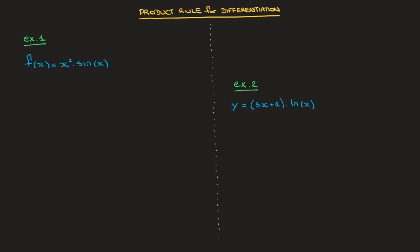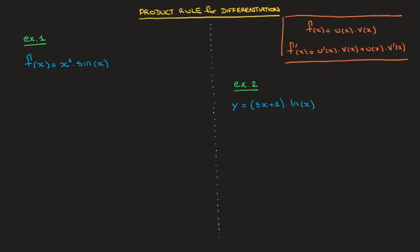The product rule states that if a function f of x is equal to the product of two functions — u of x times v of x — then its derivative, f dash of x, is equal to u dash of x times v of x, plus u of x times the derivative of v of x. Do make a note of it — this is the product rule for differentiation.